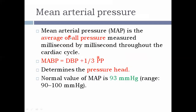The next is mean arterial blood pressure — the average of all blood pressure values. It might seem it should be SBP plus DBP divided by 2, but that's not the case because the duration of systole is comparatively lesser than that of diastole. Instead, it is diastolic blood pressure plus one-third of the pulse pressure. This mean arterial blood pressure determines the pressure head — the blood flow through a particular organ depends upon this pressure head. The normal range is around 90 to 100 mmHg.